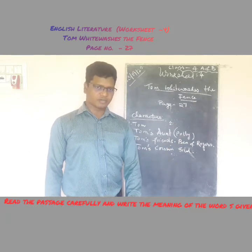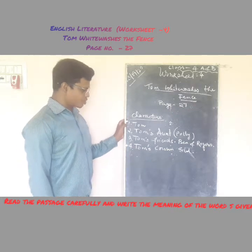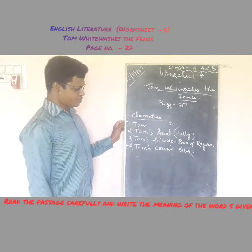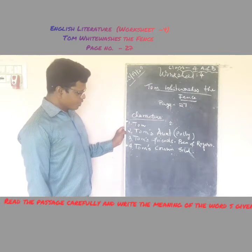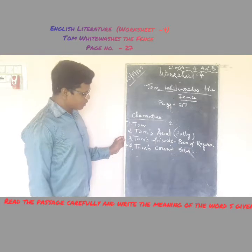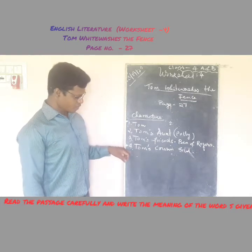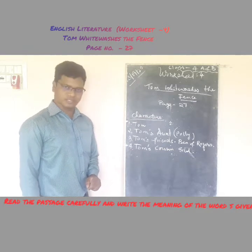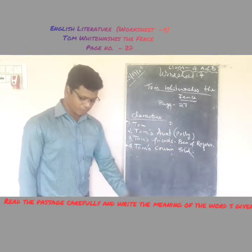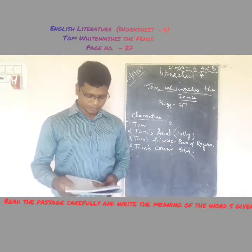Let us see the characters first, and then we'll come back to the summary of the story. The first character is Tom — he is the main, important figure in this story. Next we have Aunt Polly, Tom's aunt. Then Tom's friends Ben and Roger, and also Tom's cousin Sid. These are the characters involved in this story.